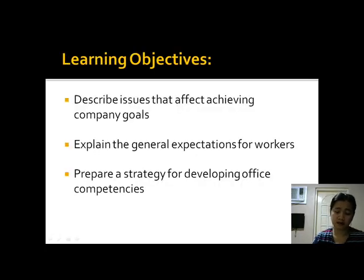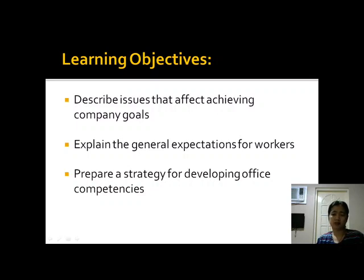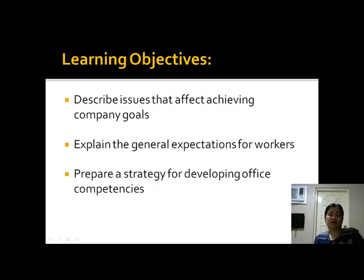As the learning objectives for this topic, we will be able to: describe issues that affect achieving company goals — what are the barriers or concerns that would affect how a company achieves its goals; explain the general expectation for workers; and prepare a strategy for developing office competencies.